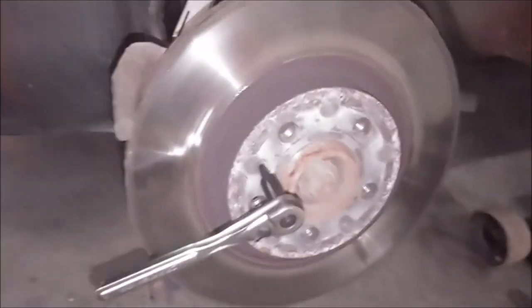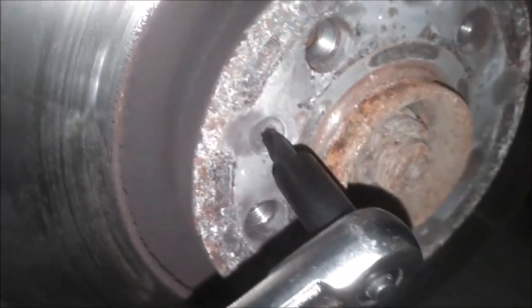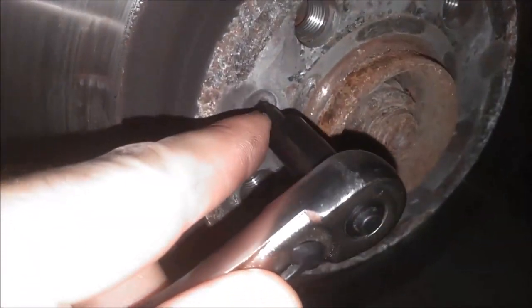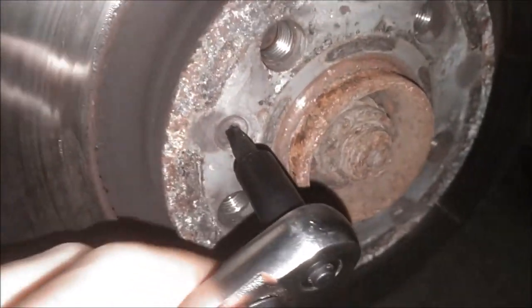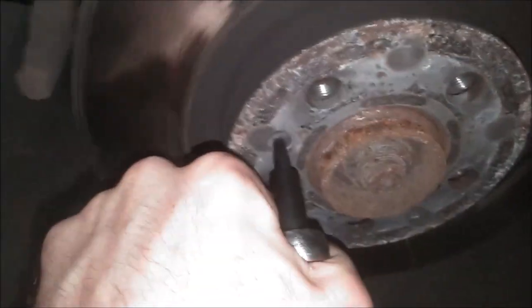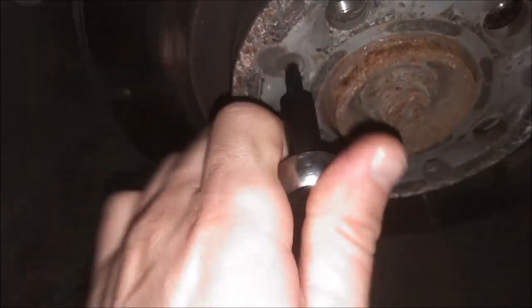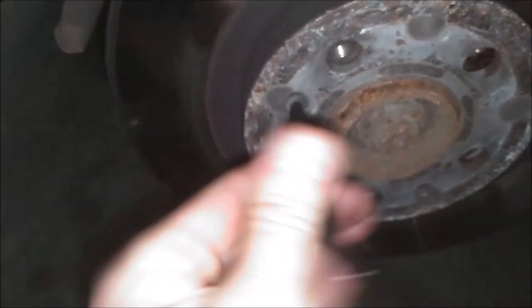And we're going to go ahead and remove this rotor. This is a T30 Torx screw in here. It's a good idea to have a couple spare because these tend to strip. So make sure you have a T30 style Torx bit and we'll go ahead and hopefully get this thing out of here without any issue. There we go. It's free.